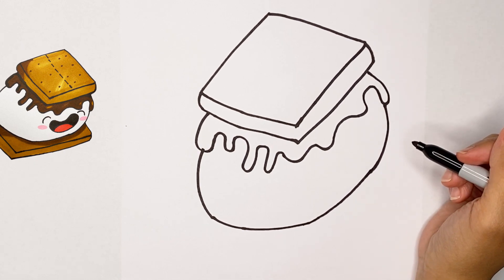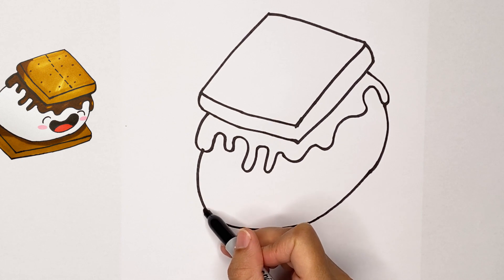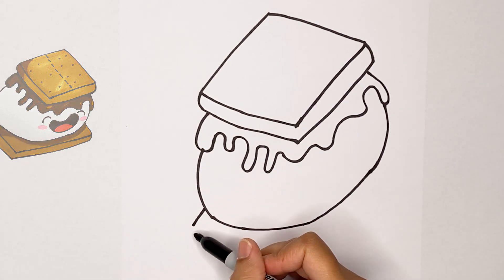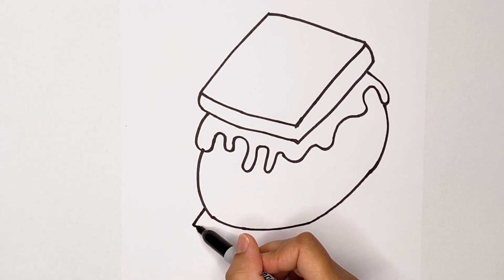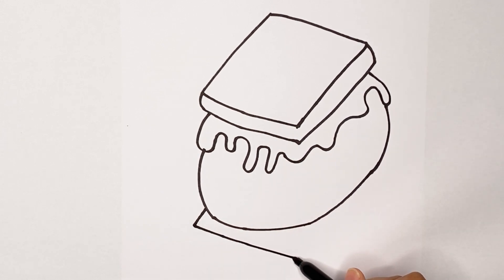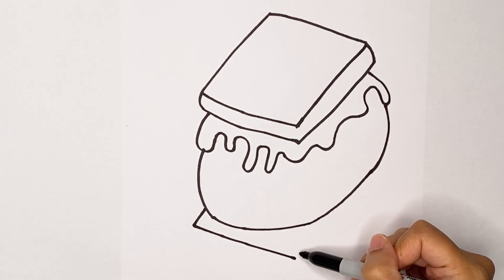Now we're going to draw another graham cracker at the bottom. So start at one of your sides and then go out a bit, and then make a straight line that goes out and then stop kind of where this point is. See how I stopped right there in the middle.